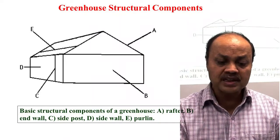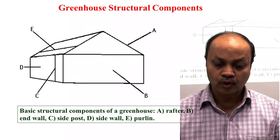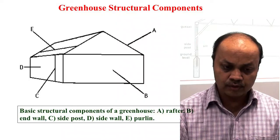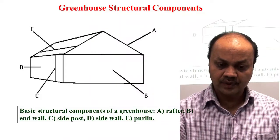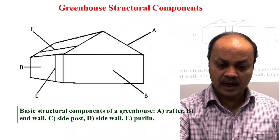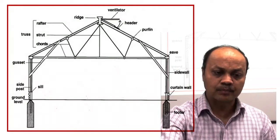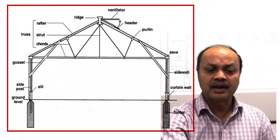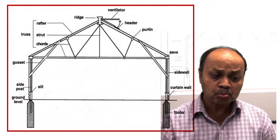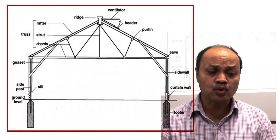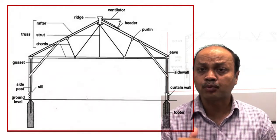Additional greenhouse terms include: the eave, which is where the rafter meets the side post; the ridge vent at the top of the greenhouse used for natural ventilation; and the truss rafter. Struts and cords are used to make the structure stronger — struts are the vertical members and cords are the horizontal members in a truss.